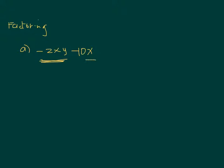If you look at negative 2xy and 10x, what is common to both of them? In terms of letters, what do you see is common? This is your first term and this is your second term. What is common in the first and the second? I have negative 2xy and then minus 10x.